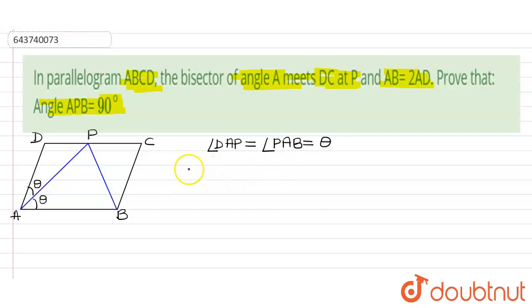Now, also we have these two angles are equal. That is angle DPA is equals to angle PAB. These angles are also equal to theta because CD is parallel to AB and PA is transversal.